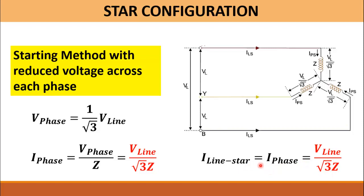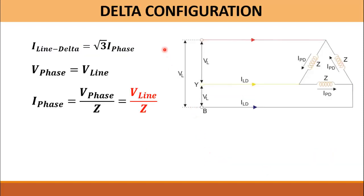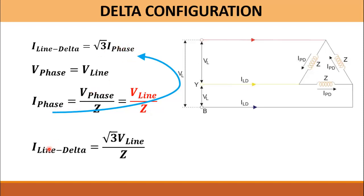So I have computed the line current in the star configuration. Now I am going to do the same in the delta configuration. These are the formulas of the delta configuration: I_phase is equal to V_phase over Z, and V_phase is equal to V_line. So I_phase is equal to V_line over Z. By putting the value of I_phase into this equation, we will get the line current in delta configuration, which is equal to √3 × V_line over Z.